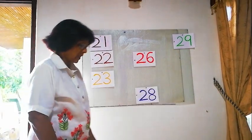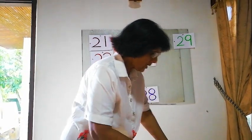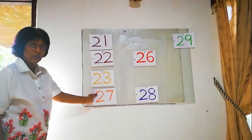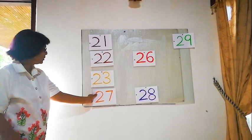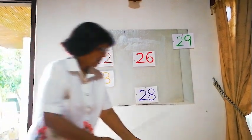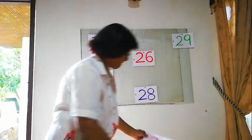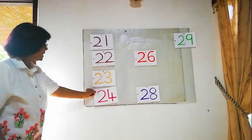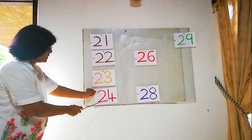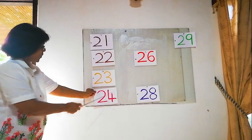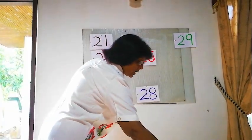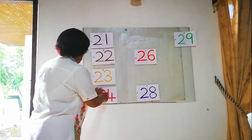We will find 24 then. Is this 24? Is this 24? No, this is not 24 — this is 27. What about this one then? Is this 24? 1, 2, 3, 4 — yes, 4. Yes, this is correct. 24 is correct. We will fix it here.